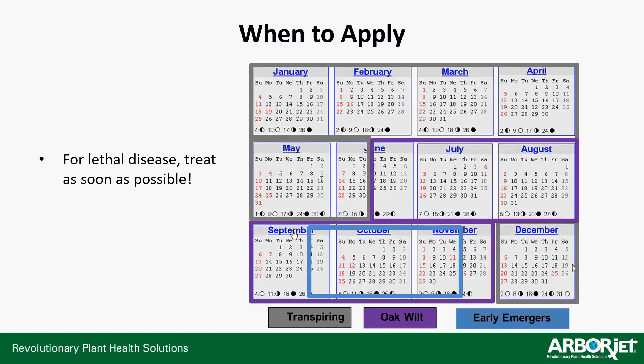If you're injecting for anthracnose, laurel wilt, ganoderma, apple scab on crab apples, or other ornamental fruit trees, those are early emergers and you're going to have really good coverage if you get those in towards the end of summer or early fall, before the leaves fall off. You want to put this in when the tree is transpiring, so in northern areas avoid wintertime. For oak wilt, wait until after the middle of June. For any lethal disease, you want to treat as soon as possible given the rest of those parameters.